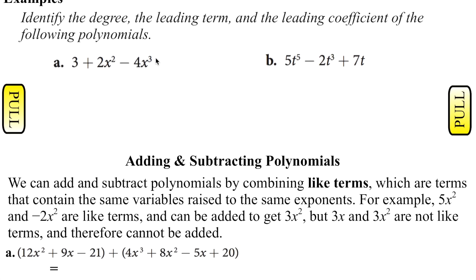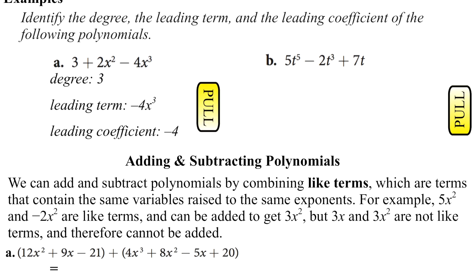These make a lot more sense when we just do some examples. In these two examples it says identify the degree, the leading term, and the leading coefficient of the following polynomials. Well, they are not in standard form. We need to put our polynomials in standard form first before we can identify those. So we want to look at this and say which variable has the highest exponent. This one doesn't have a variable. The exponent here is 2, and this one has a variable with an exponent of 3. So 3 is the highest exponent, making the degree of this polynomial 3. In standard form I would put minus 4x cubed first — that's my leading term with degree 3 — and the leading coefficient will be negative 4. That's the number part with the sign in front of that leading term. Then I would go plus 2x squared plus 3. That would be in standard form.